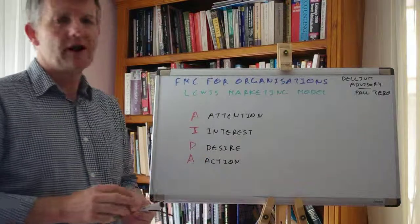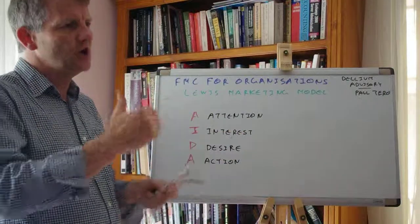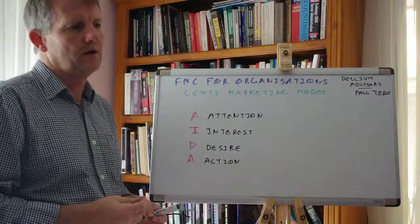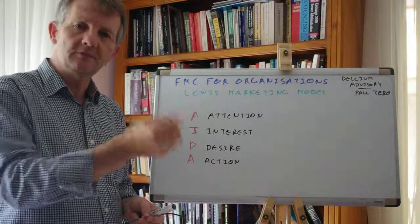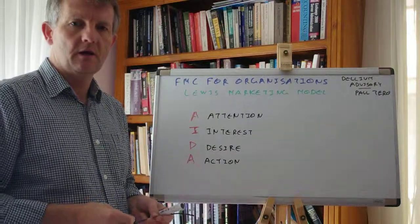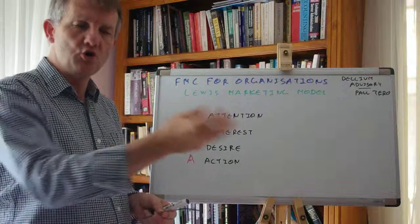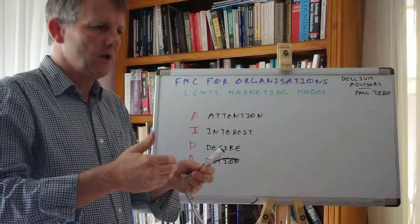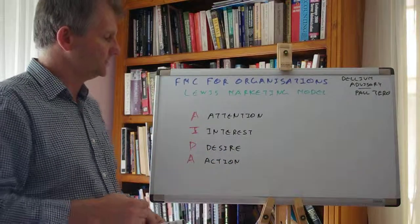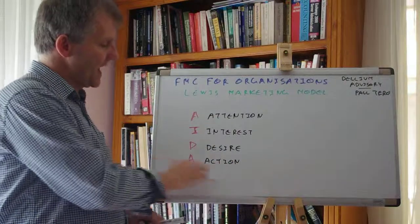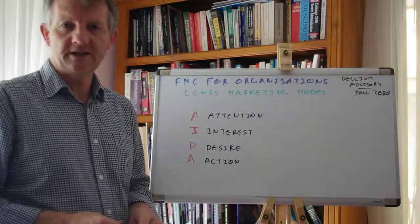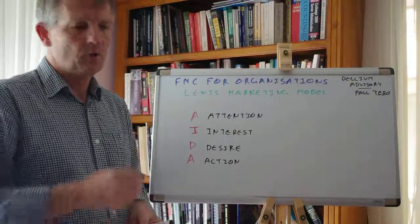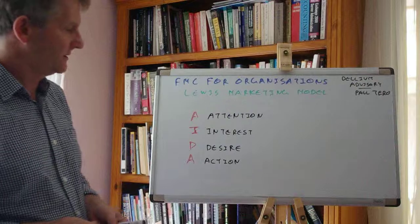And then D for Desire. Once their gaze has shifted and you've hooked their attention, how are you getting them to desire your product, your service? What are you getting them to do, to step over that line, if you will? And then A for Action — once they have stepped across the line, what do you then want them to do? What action do you want them to take?